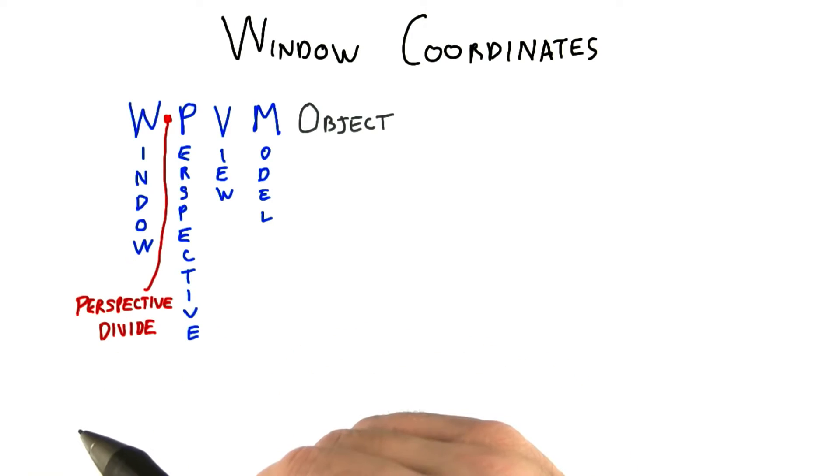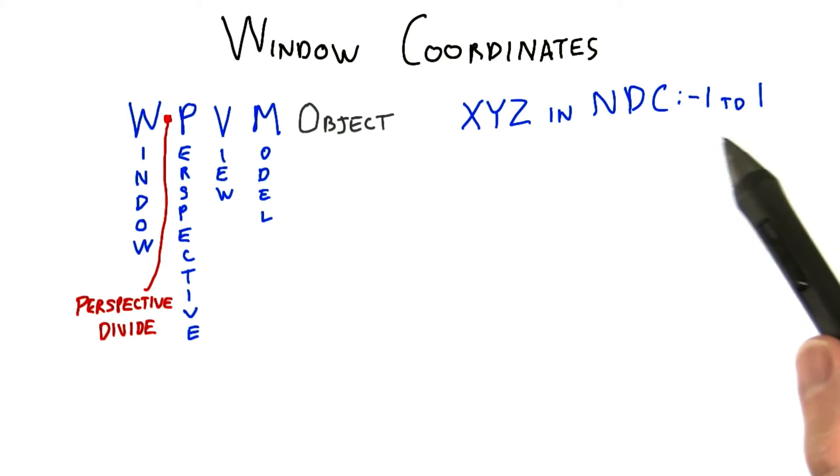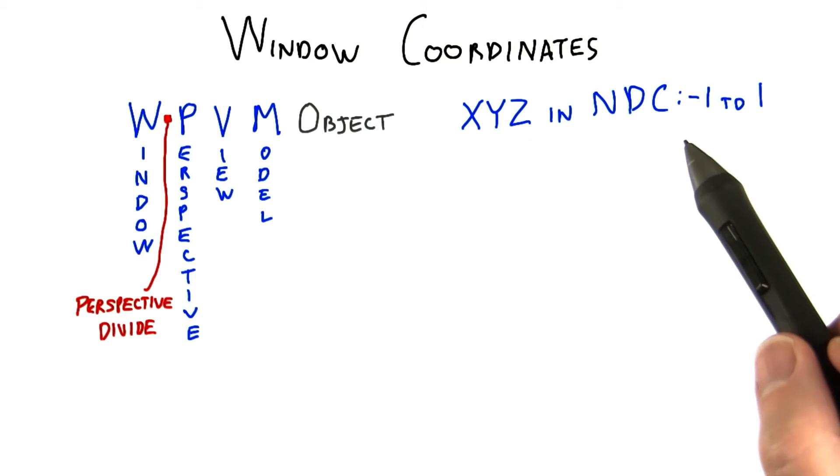There's one last transform, and it's a simple one: moving from normalized device coordinates to window coordinates. In other words, how do you move from a space of negative 1 to 1 in x, y, and z to an image with the depth buffer?